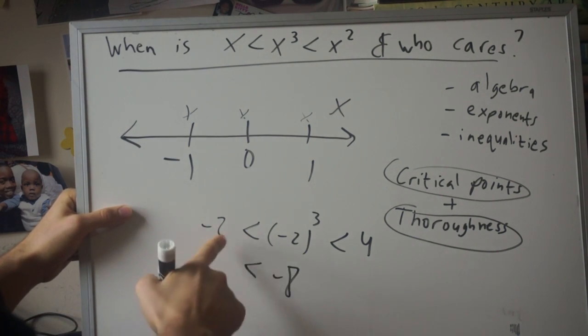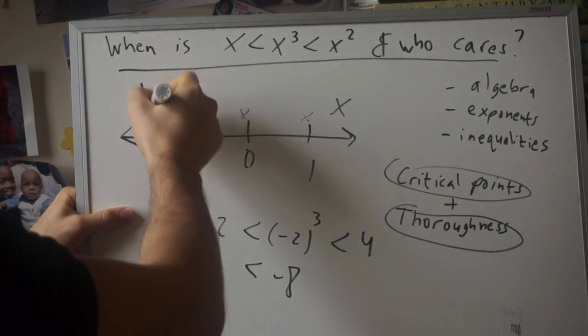And negative eight is actually smaller than negative two, so this interval doesn't work either.